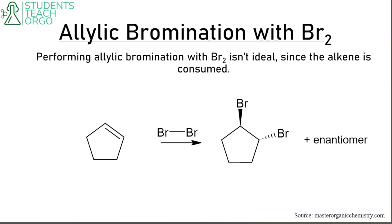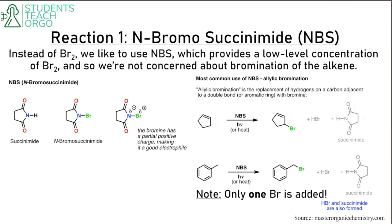So what's the solution? We use what's called N-bromosuccinimide, or NBS. NBS gives a very low concentration of Br, so we're not concerned about bromination of the alkene. Essentially, only one Br is added at a time, and it's added to the allylic or benzylic positions. You need that type of position; otherwise this won't work.